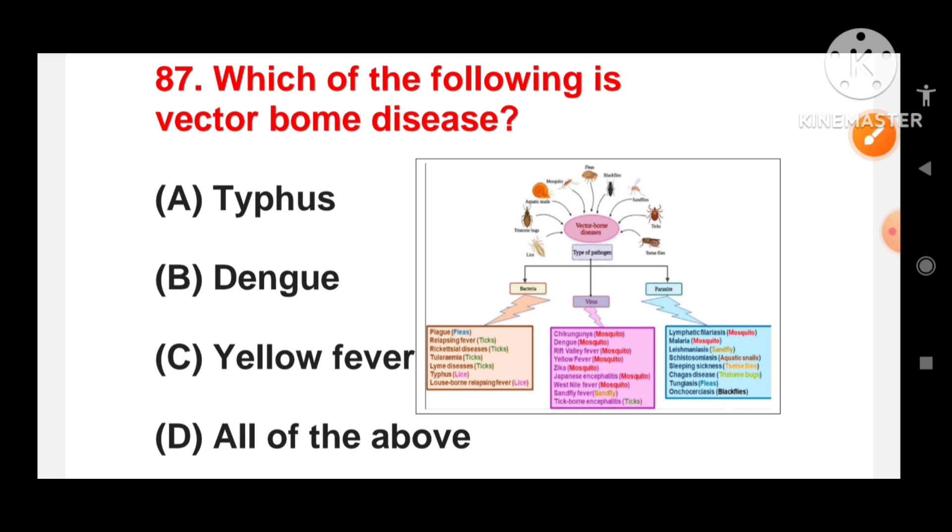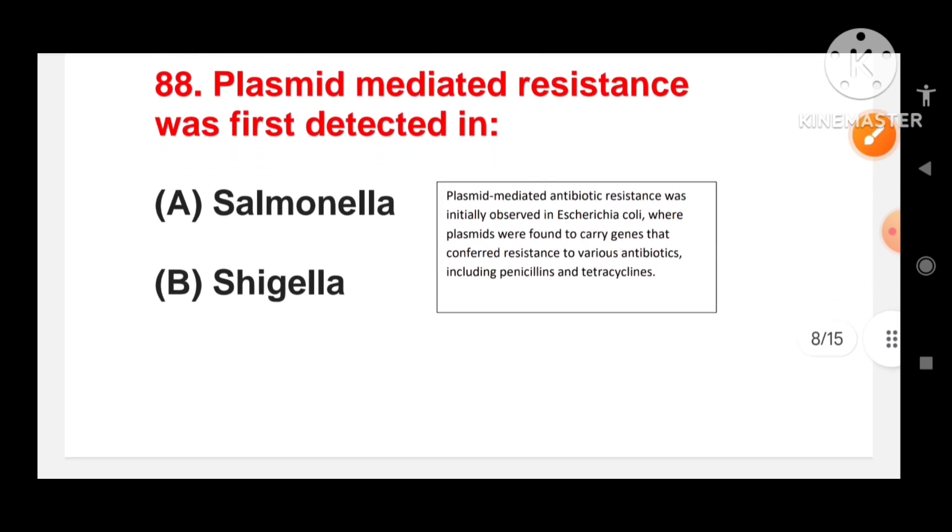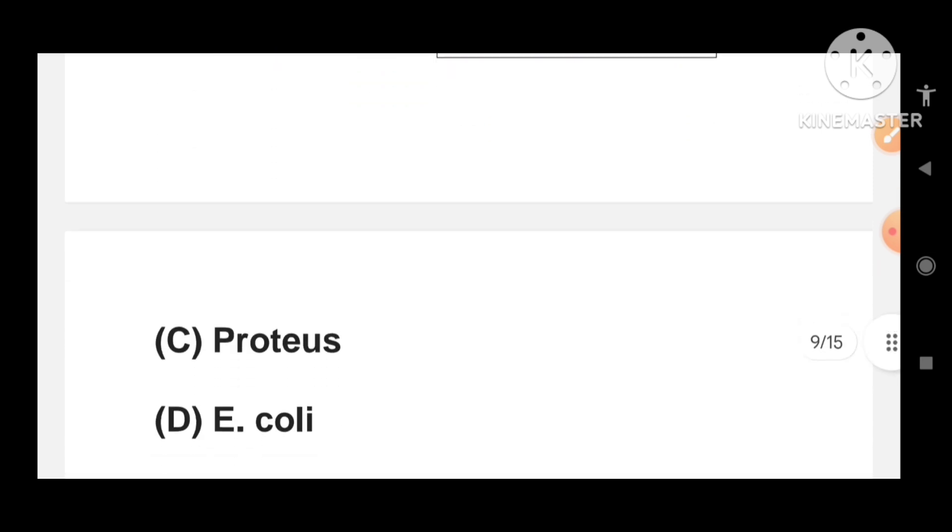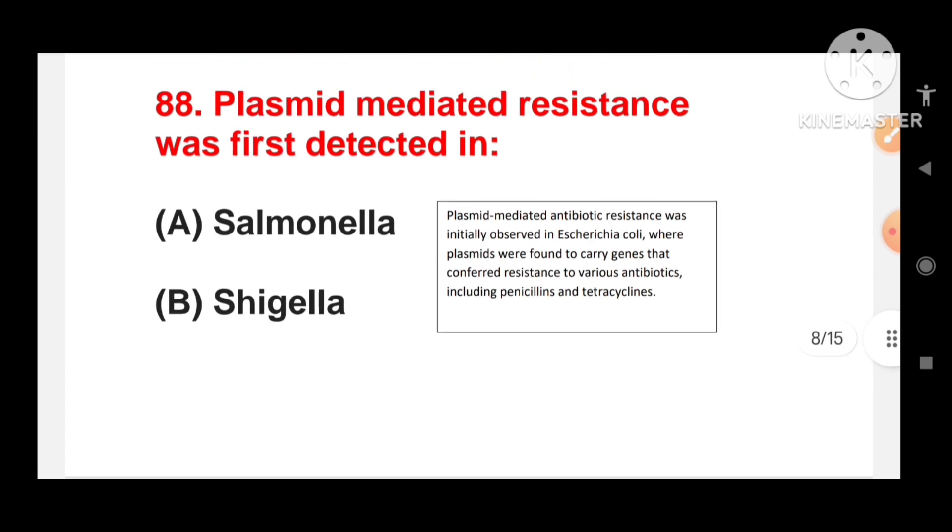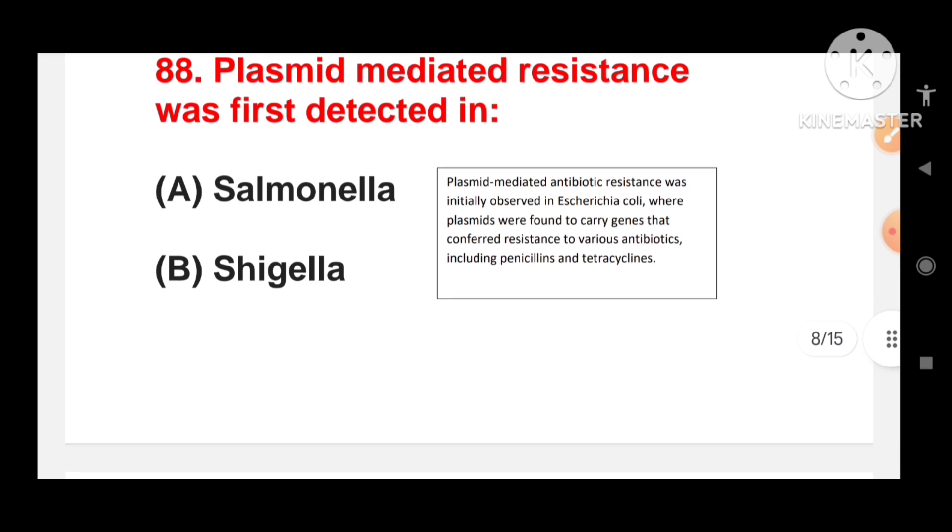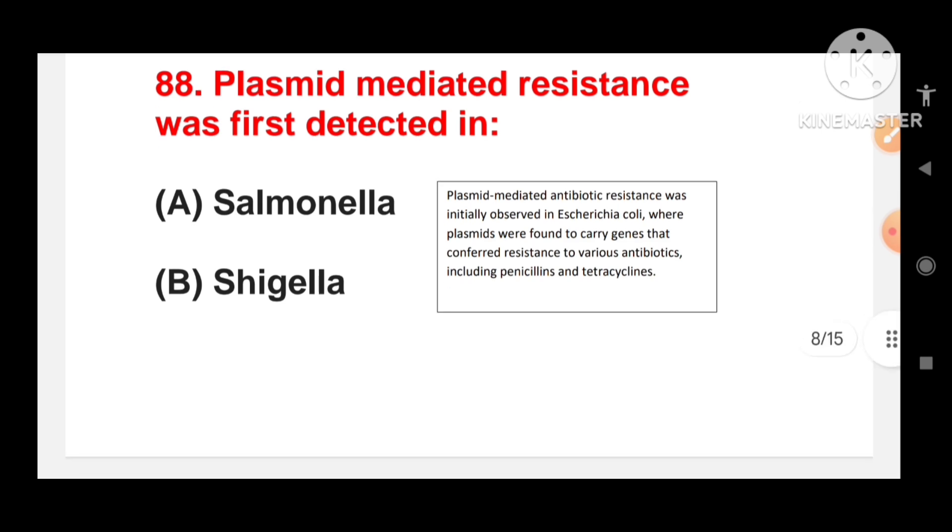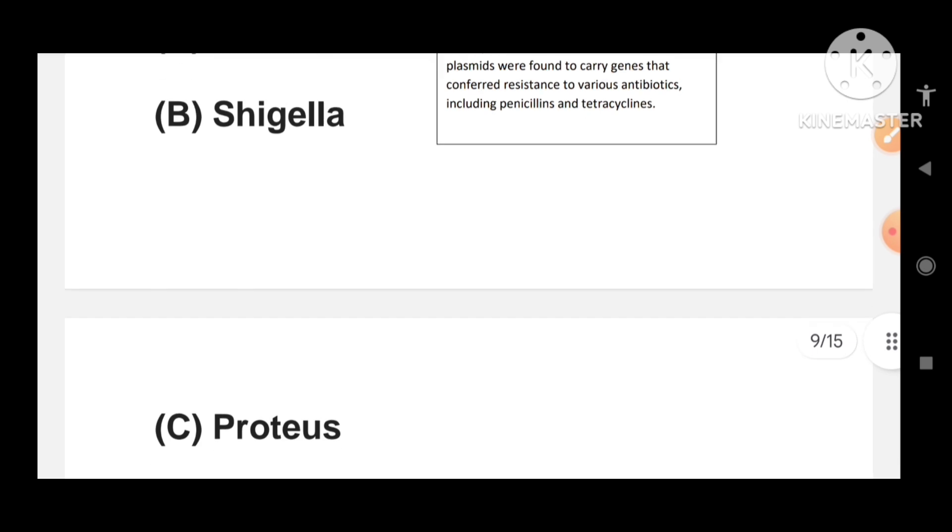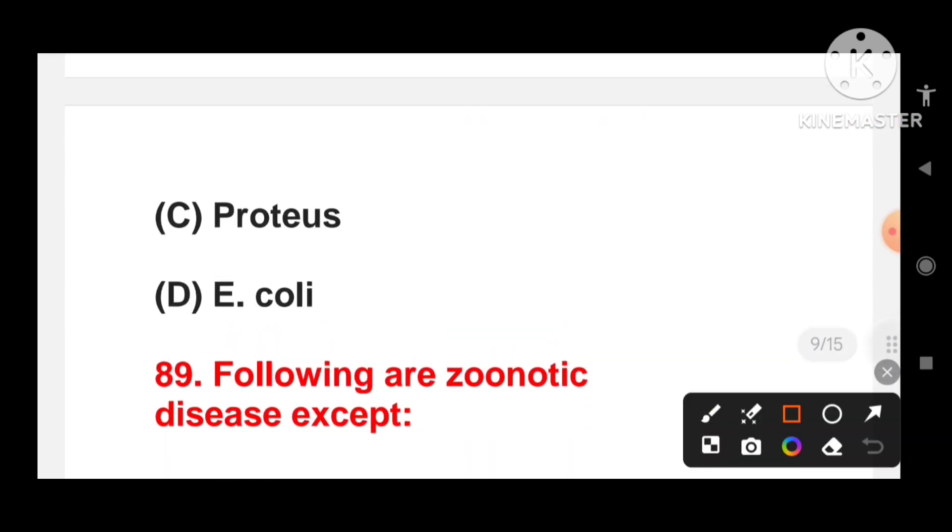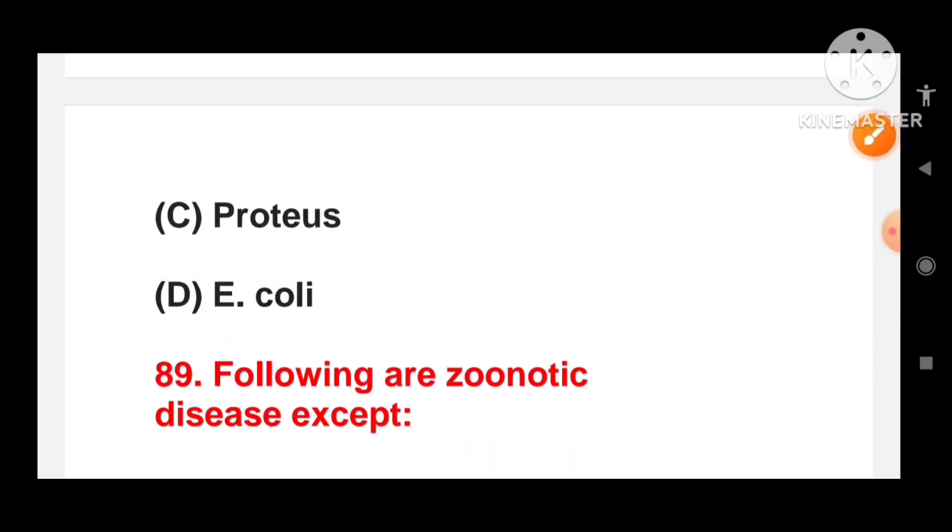Plasmid mediated resistance was first detected in: Salmonella, Shigella, Proteus or E. coli? Plasmid mediated antibiotic resistance was initially observed in E. coli, where plasmids were found to carry genes that conferred resistance to various antibiotics including penicillin and tetracycline. So first detected plasmid mediated resistance was in E. coli.